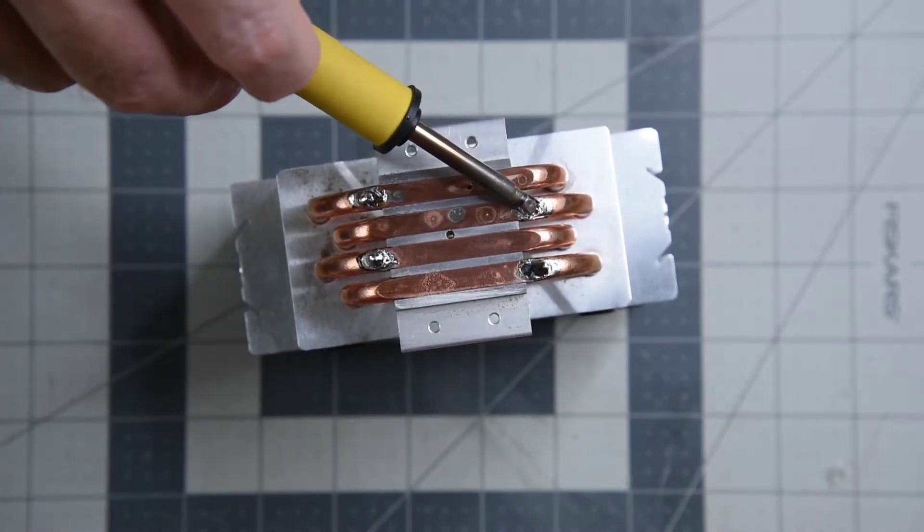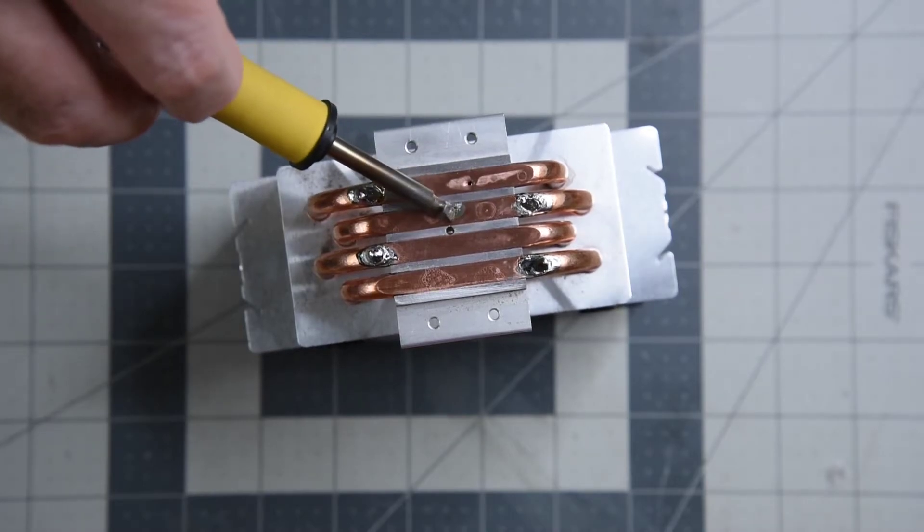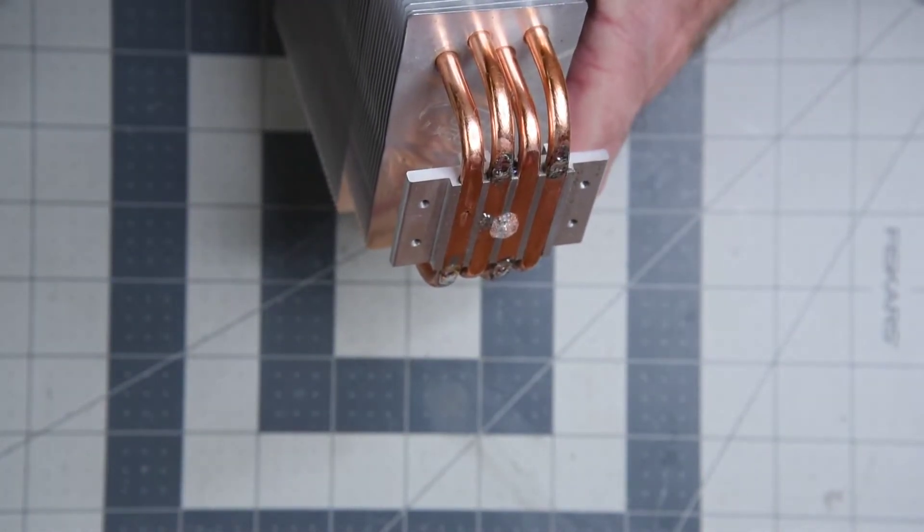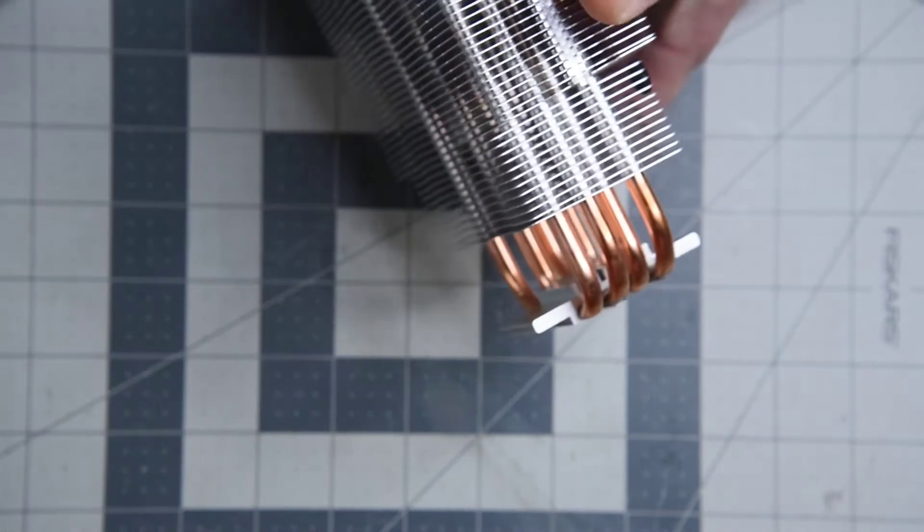I think I'll drill out the ends of these two heat pipes so I can put some air in them. Okay, that's the one without the dent. That means I destroyed that one when drilling the hole for the thermocouple.